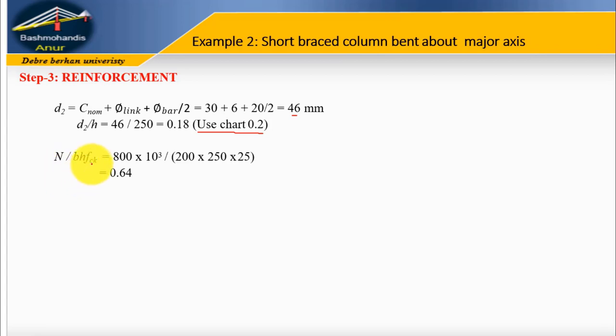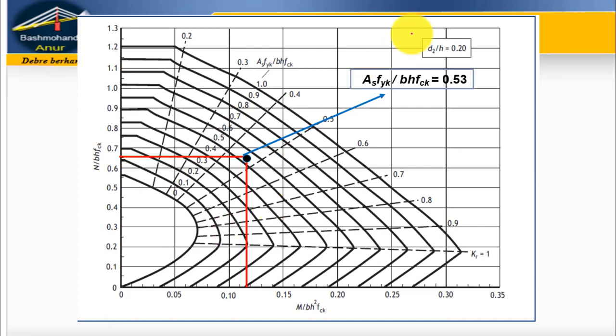Let us see the normalization. N normalized equals N ED divided by b times h times f ck, which gives 0.64. Next, the normalized moment M normalized equals M ED divided by b times h squared times f ck, which equals 0.11.